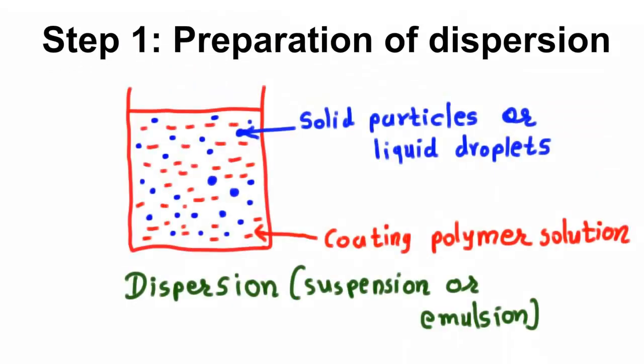In this step, we have to prepare a dispersion. Dispersion is called as a suspension if the core material is solid. Here, we are going to deposit coating material on the surface of fine solid particles. The dispersion is called as an emulsion if the core material is liquid droplet. In this case we are going to deposit coating material on the surface of liquid droplet.